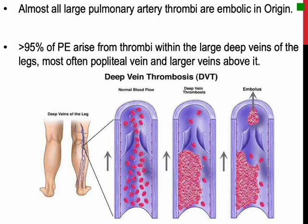Blood clots that occlude the large pulmonary arteries are almost always embolic in origin. More than 95% of all pulmonary emboli arise from thrombi within the large deep veins of the legs, most often those that have propagated to involve the popliteal vein and the large veins above it.